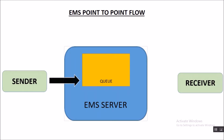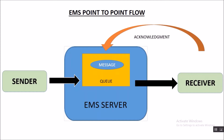Our sender sends a message and that message gets stored in the queue. As soon as our listener or receiver is ready to receive the message, the message is dispatched from the EMS Server to the receiver. After receiving this message, our receiver sends an acknowledgement — an indication that the message has been delivered. The message will then be deleted from the queue. This is how acknowledgement works.